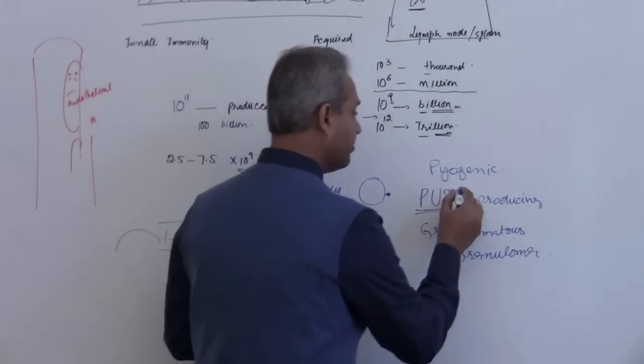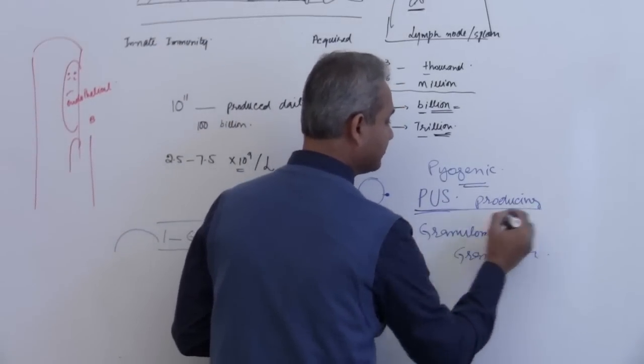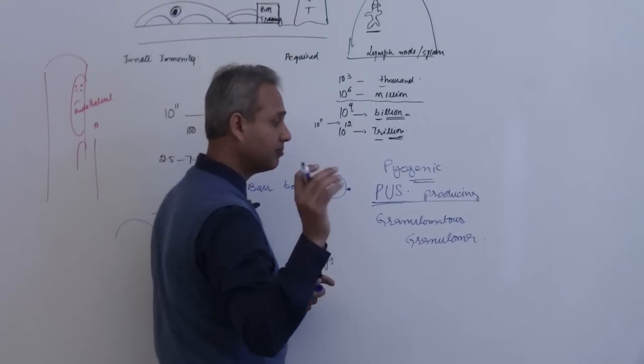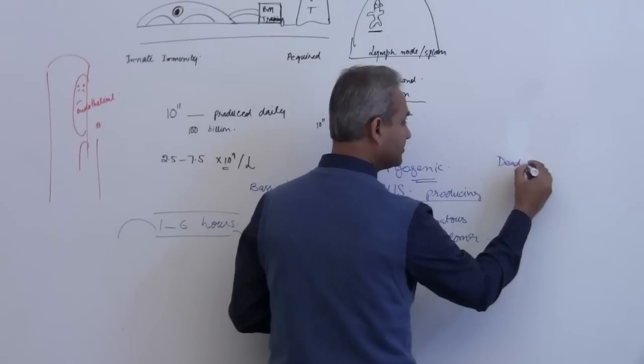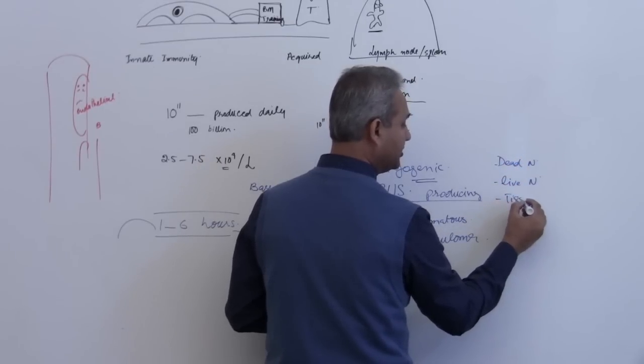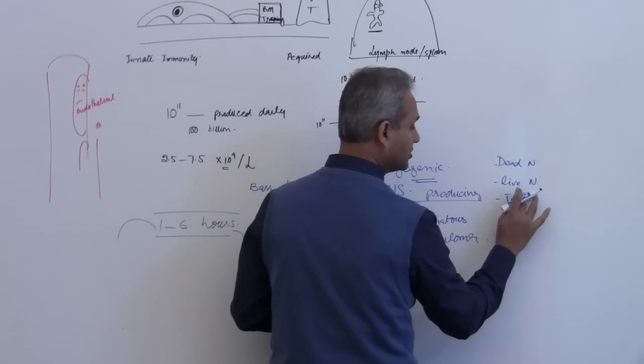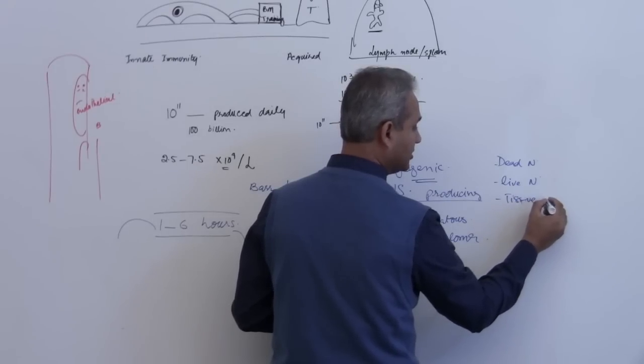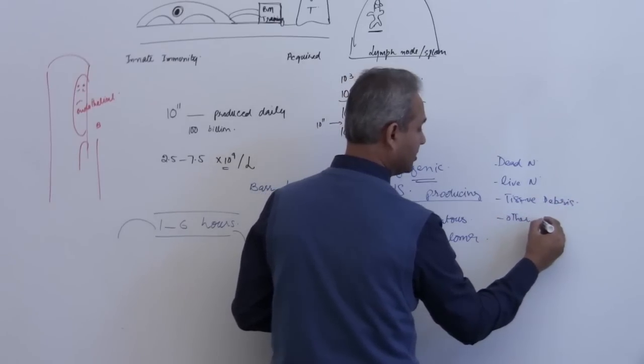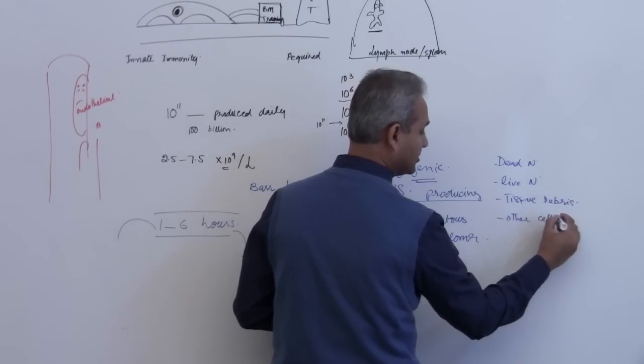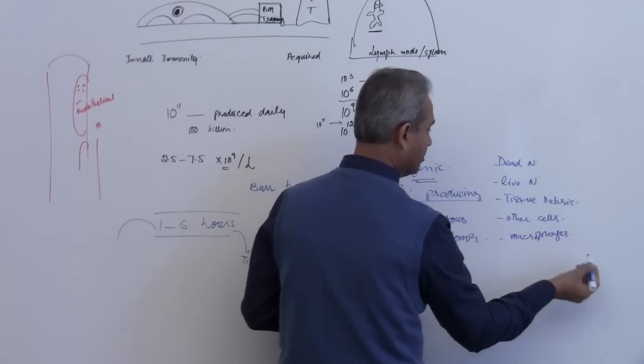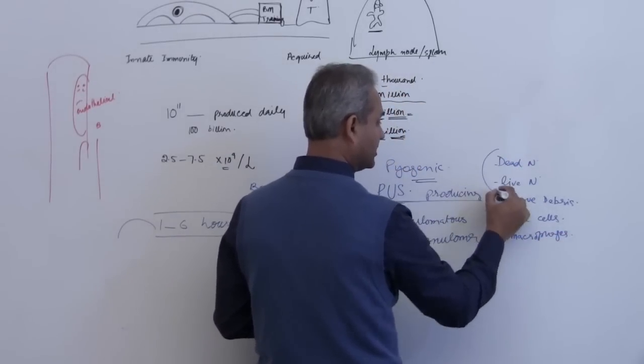What that means is, biogenic or pus-producing defense is the defense in which there is pus produced. And pus is dead neutrophils, live neutrophils, tissue debris - it doesn't have three S in it, it has two S - tissue debris, other dead or live cells, some macrophages of course. So the primary thing is these.